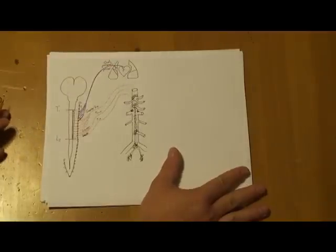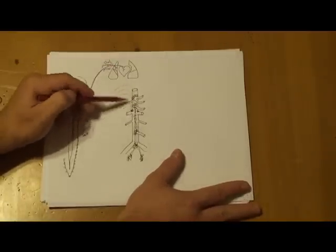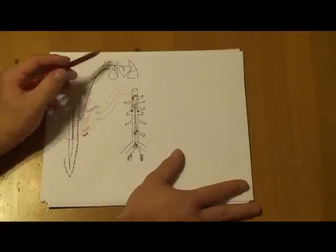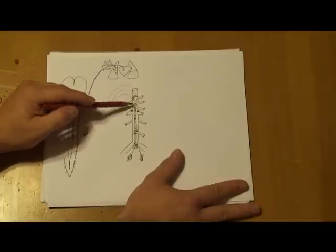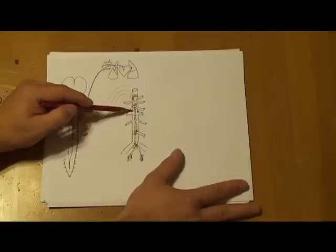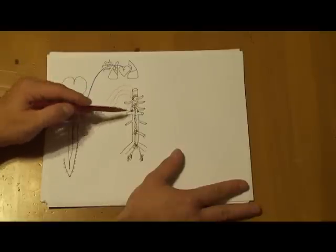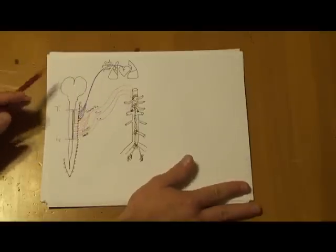This is a simplification and in fact there's quite a bit of transfer between each of these, but for the purpose of this course we'll treat it as though the greater is projecting to the celiac, the lesser to the superior mesenteric and aortico-renal, and the least to the aortico-renal ganglia alone.